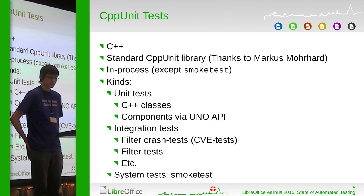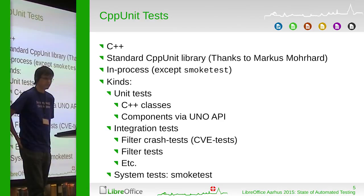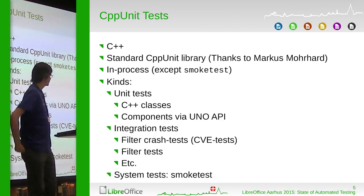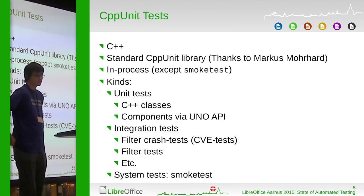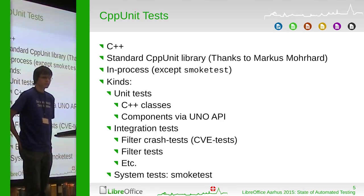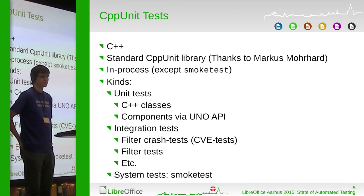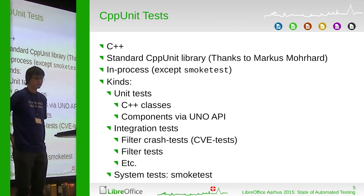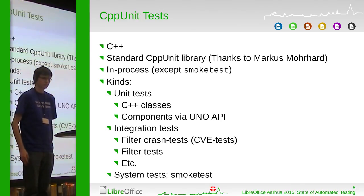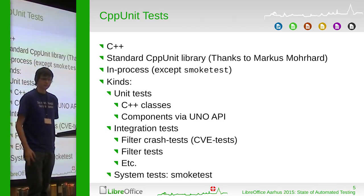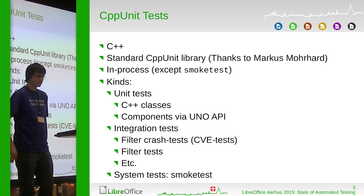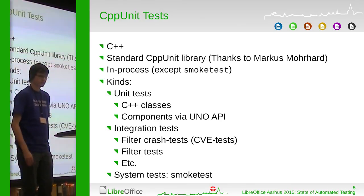At the highest level we have a whole system test — the smoke test — which is only nominally a CPPUnit test because the actual test code is loaded from a document and is actually Basic macros. This test does some high-level stuff like installing an extension.